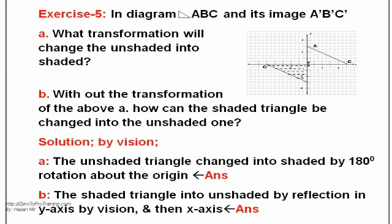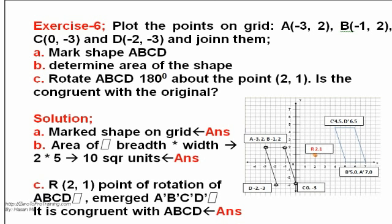Exercise 5: In diagram by vision change. A: Unshaded into shaded by 180 degree rotation by origin. B: Shaded into unshaded by reflection in Y axis and then X axis. Exercise 6: Plot on grid (-3, 2), (-1, 2), (0, -3), (-2, -3). A: Shape ABCD parallelogram. B: Area BW is 10 square units. C: Rotation at (2, 1) depicted and congruent to original.